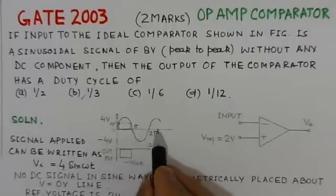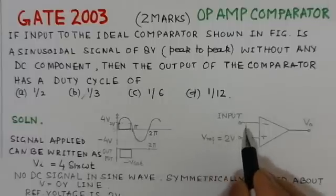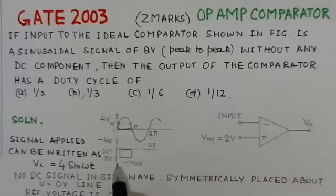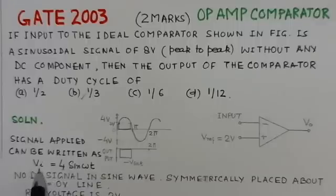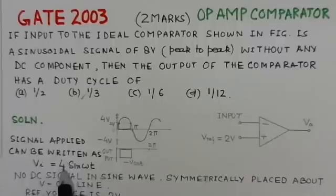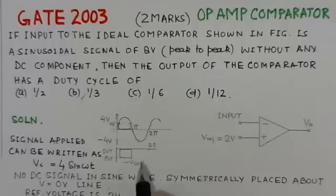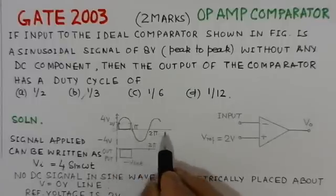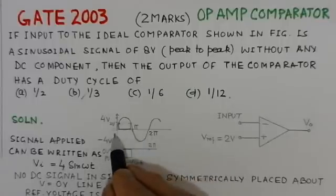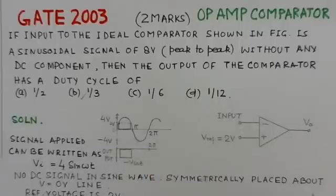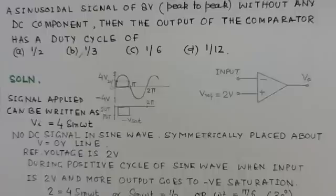This signal can be written as Vi = 4 sin ωt, where 4 is the peak value. There is no DC signal along with the sine wave, meaning this sine wave is symmetrically placed around zero volt line, and the reference voltage is 2 volts.